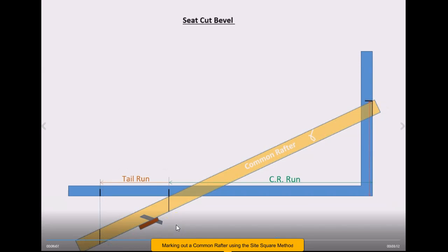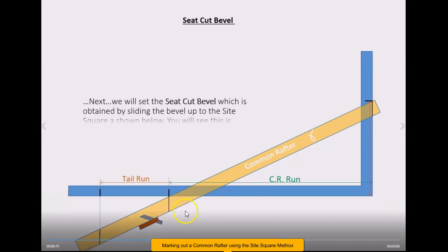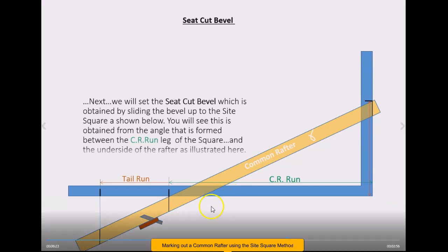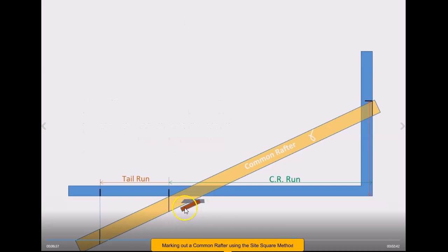The next thing you'll have to think about is you're going to have to mark the seat cut or the level portion of your bird's mouth, which is important here. Again you're going to slide your bevel up to here and you're going to align the blade with the run leg on your square. You're going to see that occurring here now in this little illustration here. Once you have that done, then you're going to slide it back down here and then we're going to complete the bird's mouth, the marking of the bird's mouth. There we are, we've just swung there to align the blade on the bevel, and that's now going to get slid down here to mark out your bird's mouth right here.